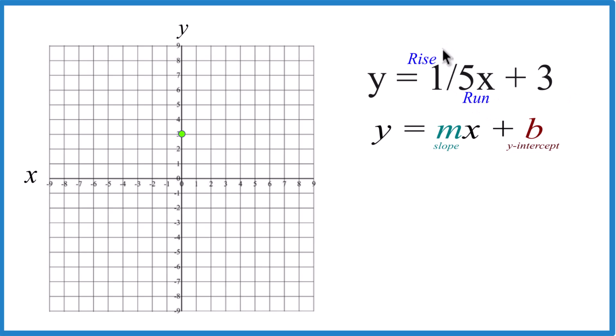So what we'll do is we'll rise one and then run five. So we go to the y-intercept, we rise one, and we go over one, two, three, four, five. There's our point.